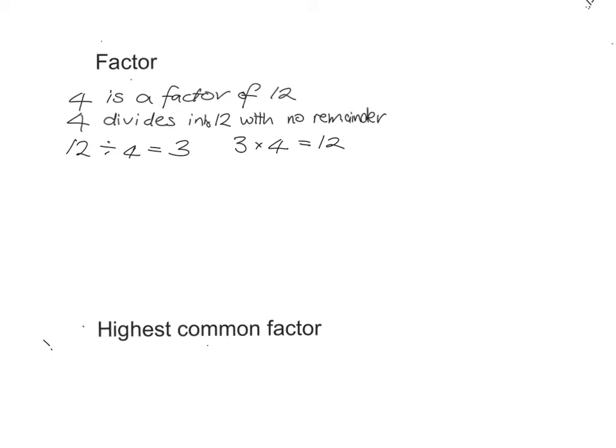So we can identify that 4 is a factor of 12, either by seeing that 12 divided by 4 gives you a whole number, or by seeing that 3 multiplied by a whole number gives you 12. So 4 is a factor of 12, because 4 divides into 12 with no remainder, or because a whole number multiplied by 4 gives you 12. And of course, there are lots of other factors of 12. For example, 3 is a factor of 12.